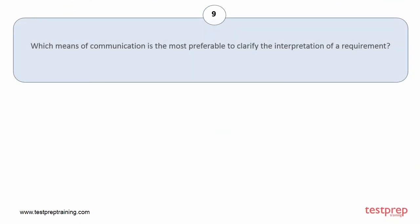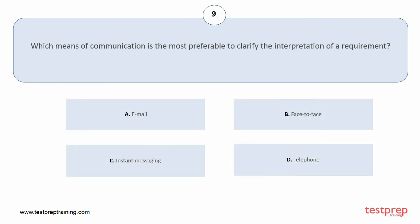Question number 9: Which means of communication is the most preferable to clarify the interpretation of a requirement? Your options are: A, email; B, face-to-face; C, instant messaging; D, telephone. The correct answer is option B.